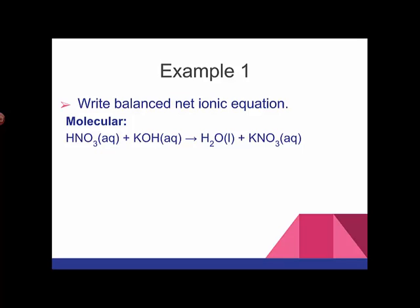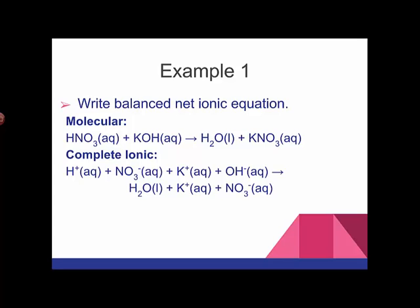So we don't really have HNO3. We have H-plus and NO3-. We have K-plus and OH-. We have H2O, which forms. That's a non-compound. And then we have K-plus and NO3-. Those are spectator ions, the K-plus and the NO3-. So we take them out.